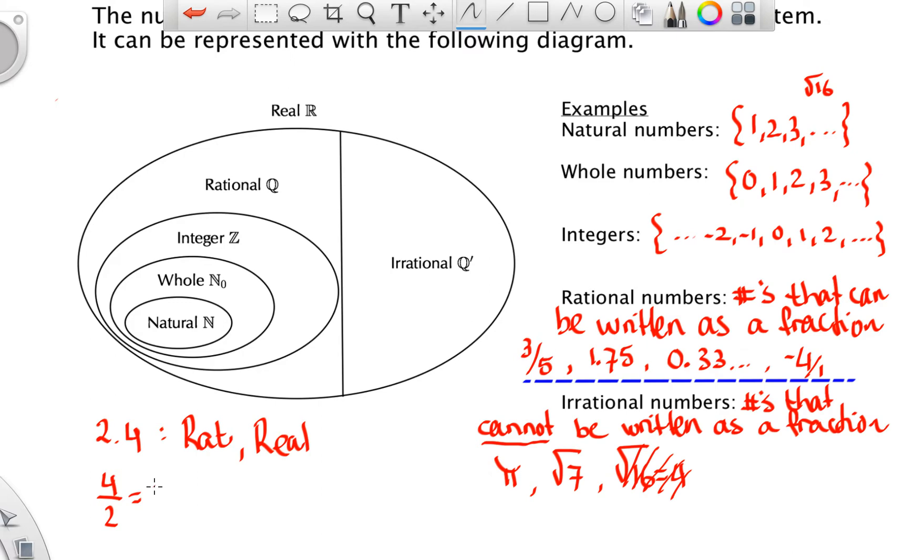Well, 4/2 is actually 2. So if I look at 2, 2 would be a natural number. It's also a whole number then. That makes it an integer as well. That makes it rational and real. So you have to list all of the groups that it can fit into.